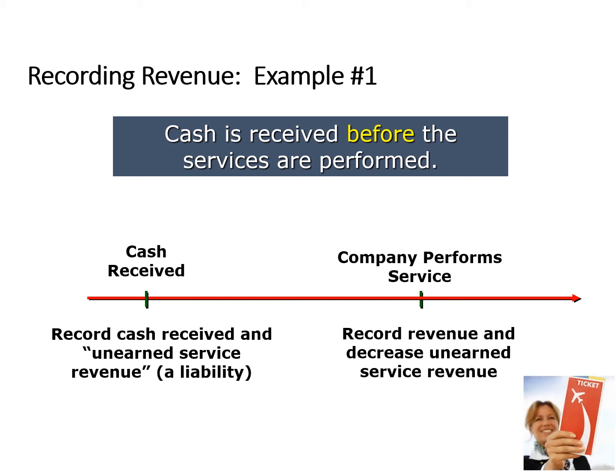Delta Airlines does not record revenue when a customer buys a plane ticket, but rather when they provide the service. If you purchase a ticket on May 1st, Delta will record an increase in cash as well as a liability. The revenue will be recognized on June 15th when you actually get on the plane. At that point, Delta reduces the liability and increases or recognizes revenue.